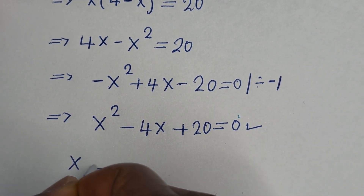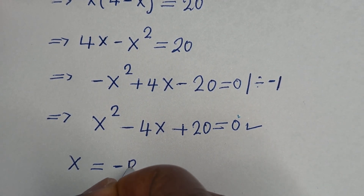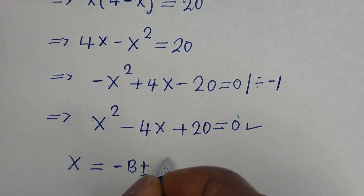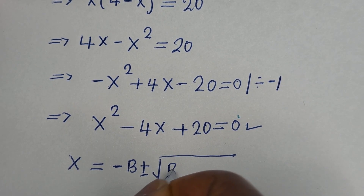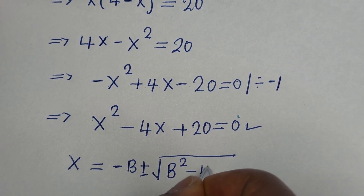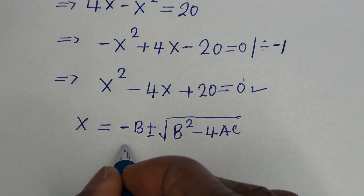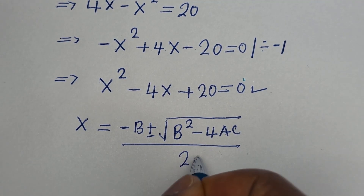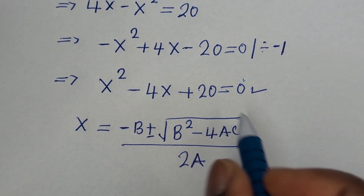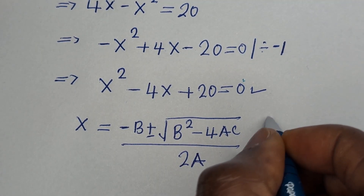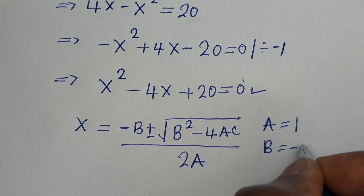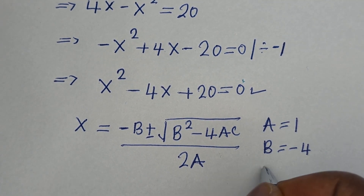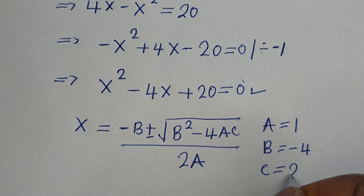This can be solved using the quadratic general formula: x is equal to minus b plus or minus square root of b squared minus 4ac, over 2a. From this equation, a is equal to 1, b is equal to minus 4, c is equal to 20.